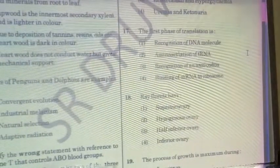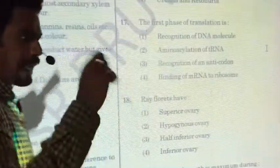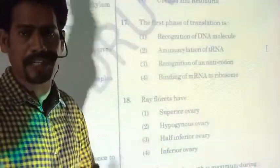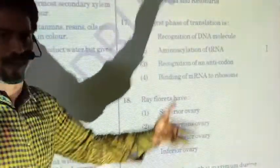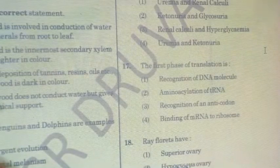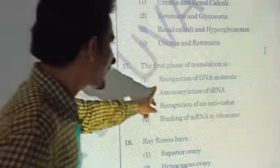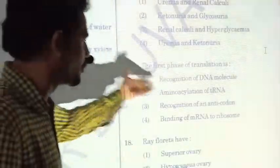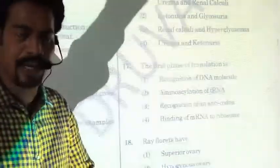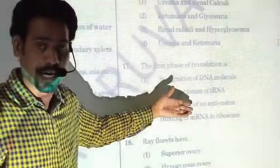Question seventeen: translation is the process where the template is mRNA. The message in mRNA is decoded by specific machinery produced by DNA — including rRNA, tRNA, and enzymes from specific genes. Recognition of the DNA molecule is not needed during translation because the DNA's function is already done — it has produced mRNA and sent it to the cytoplasm.